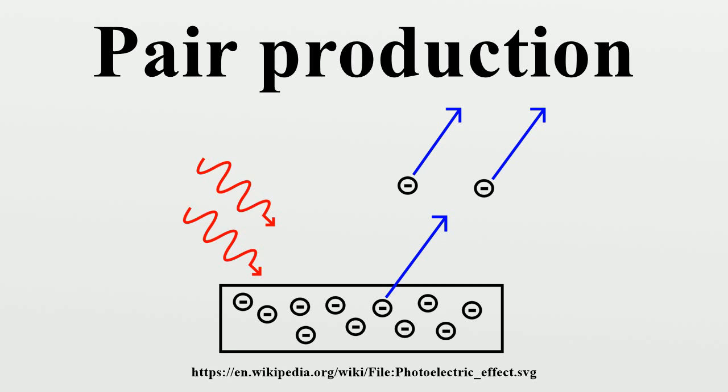However, all other conserved quantum numbers of the produced particles must sum to zero, thus the created particles shall have opposite values of each other. For instance, if one particle has electric charge of plus one, the other must have electric charge of minus one, or if one particle has strangeness of plus one, then another one must have strangeness of minus one.